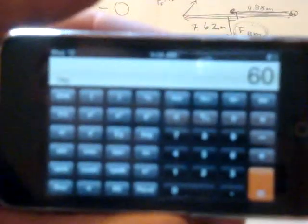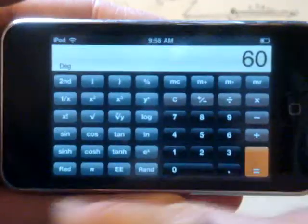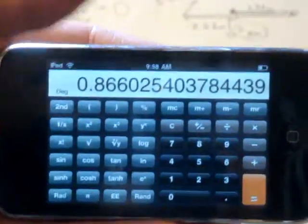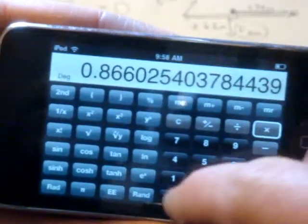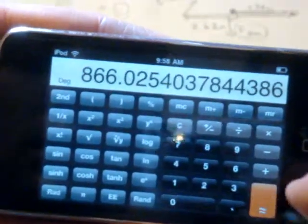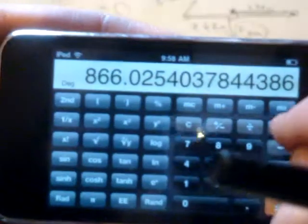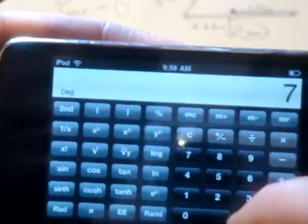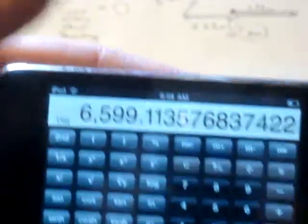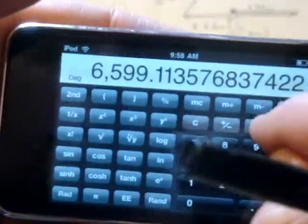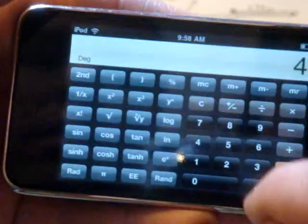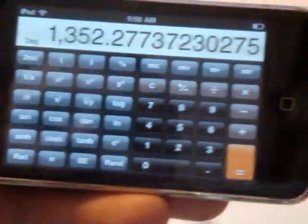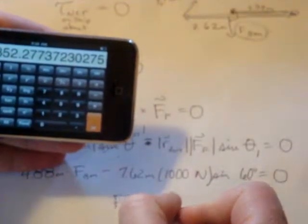Let's see what we get. Sine of 60 is 0.866 times 1,000 times 7.62. We add that to both sides and divide by 4.88. We get 1,352 newtons. Whoa!